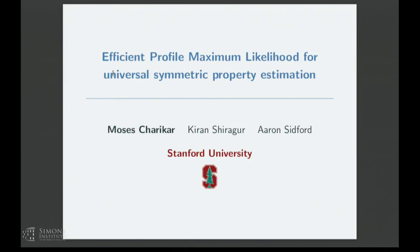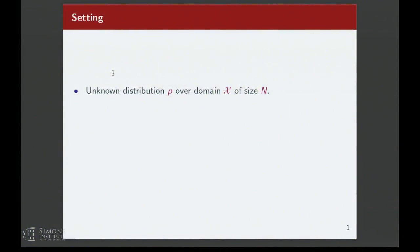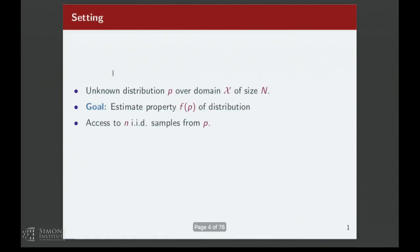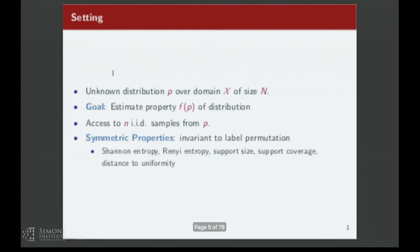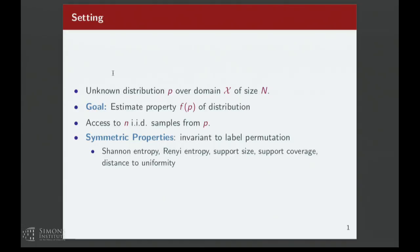Let me start with a simple problem — STOC is about a simple problem; I want to explain what this problem is. The setting is that we have some unknown distribution over a domain, and we have access to this unknown distribution via samples. We'd like to estimate some property of this distribution, given n IID samples. We'll think about symmetric properties — properties that don't depend on the actual identities of the objects we see in our sample.